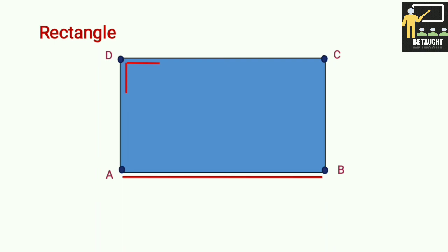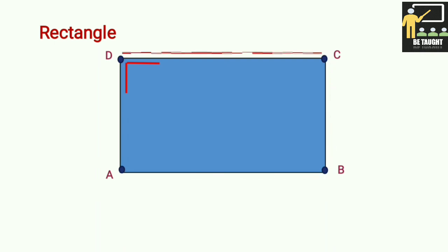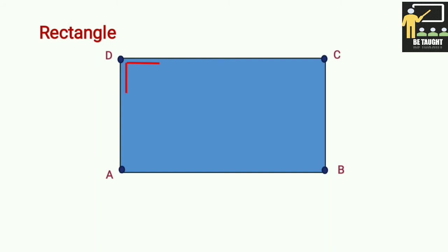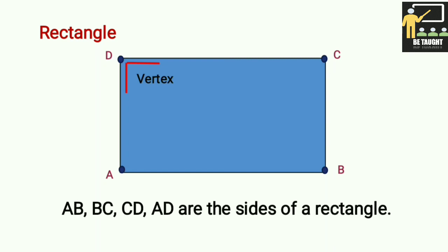AB, BC, CD, and AD are the sides of the rectangle. Opposite sides are equal in length, so a rectangle is called a right-angle quadrilateral.